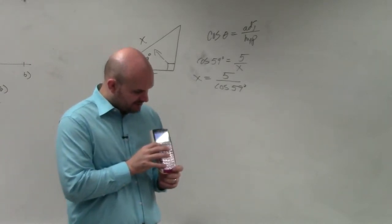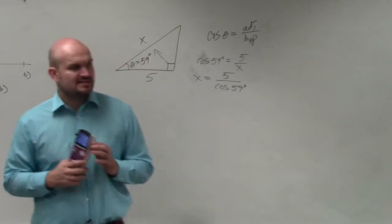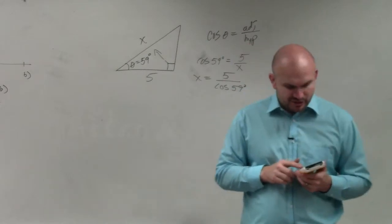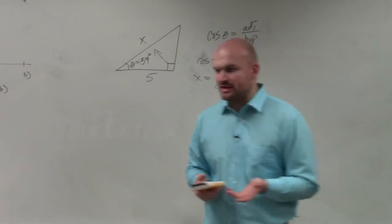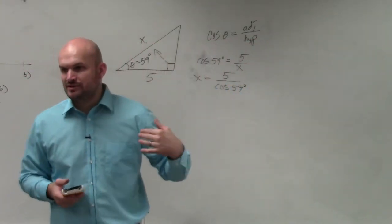On a graphing calculator, you can simply hit the mode and then go down to the fourth row. You guys see that there's radian degree. Just make sure that degree is highlighted. Then you can hit second mode, which will be your second quit. Just make sure you're in degree mode, not radian mode as you're doing this.